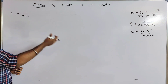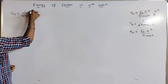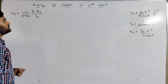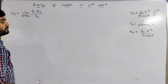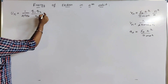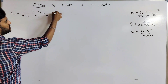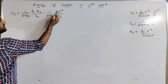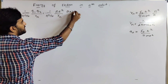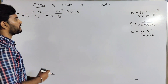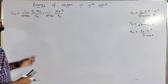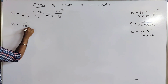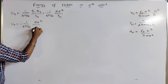So we will find the potential energy of the electron in the nth orbit. The potential energy Un equals minus 1 over 4πε₀, multiplied by Ze squared divided by Rn.